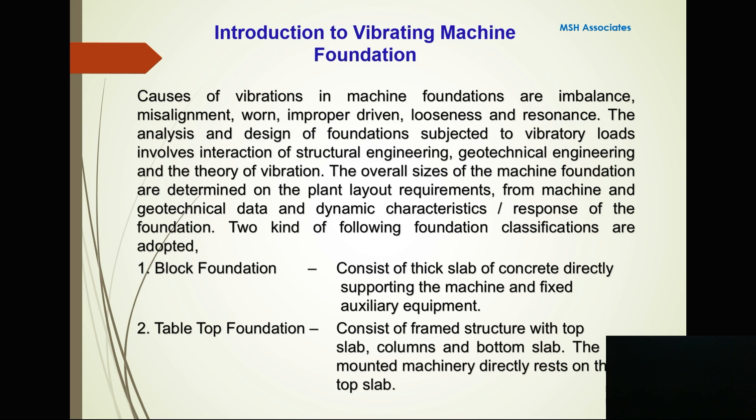Basically we deal with two kinds of machine foundations. Number one is a block foundation — a thick slab of concrete directly supporting the machine and fixed auxiliary equipment. Second is a tabletop foundation, which consists of a framed structure with a top slab, columns, and bottom slab. The skid-mounted machinery directly rests on the top slab.